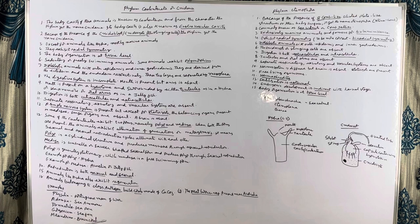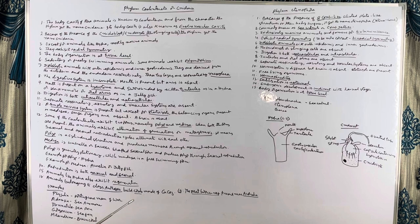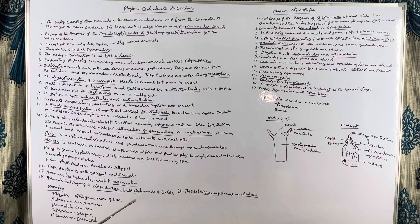Polyps are generally stationary whereas medusa is a free-swimming form. An example of polyp is Hydra, and an example of medusa is Aurelia or jellyfish. In this phylum, reproduction occurs both sexually and asexually. Some animals like Hydra also exhibit regeneration — the capacity to regrow lost or missing body parts. The power of regeneration is very high in Hydra.